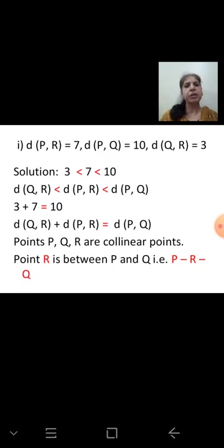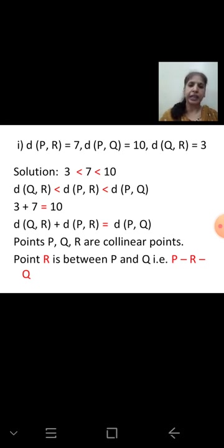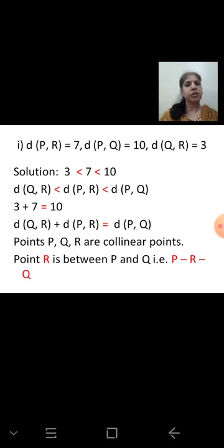First question: distance between points P and R is 7, distance between P and Q is 10, and distance between Q and R is 3. We arrange the numbers in ascending order: 3, 7, 10. The smallest is 3, which is the distance between Q and R, then distance PR = 7, then distance PQ = 10.